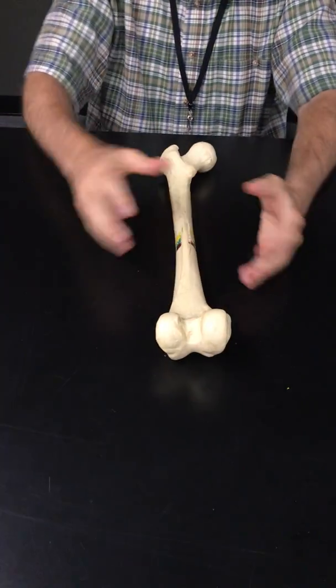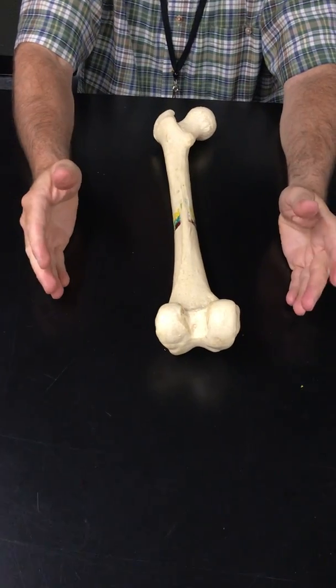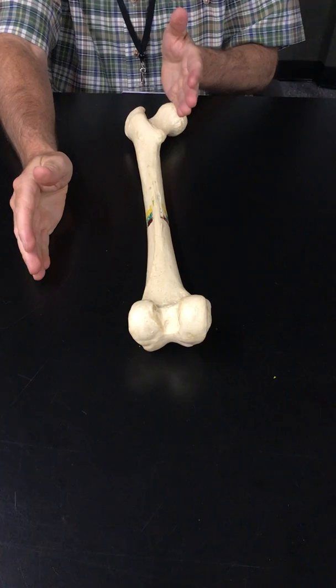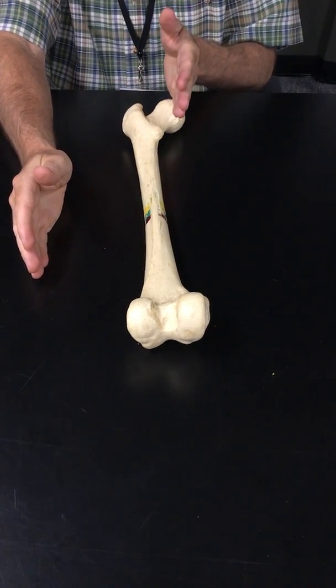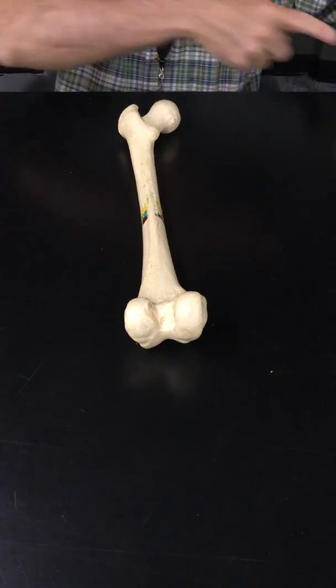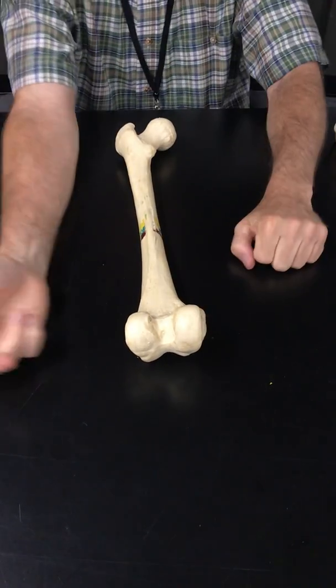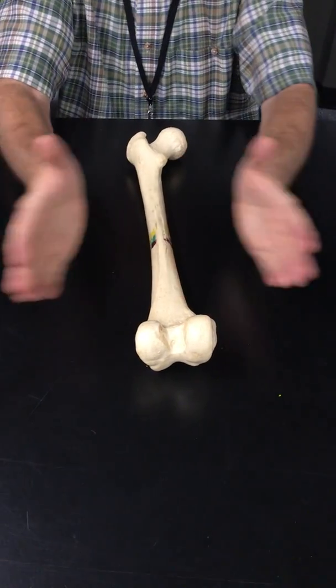Now, the condyles are simply named based on their location. There's a medial condyle and a lateral condyle. The head is always medial, pointing towards the midline. Medial condyle, lateral condyle of the femur.